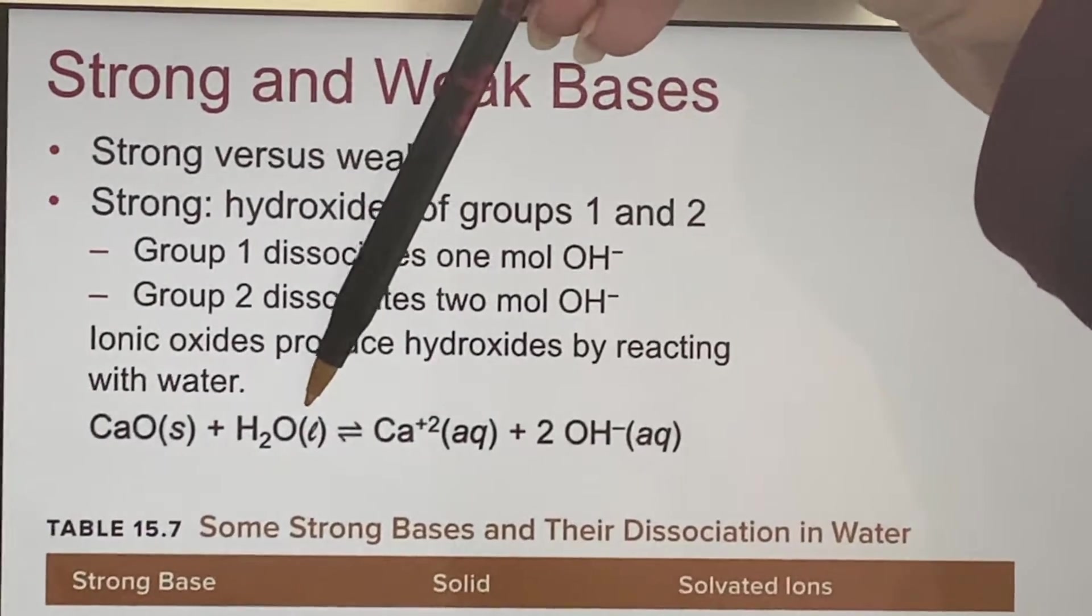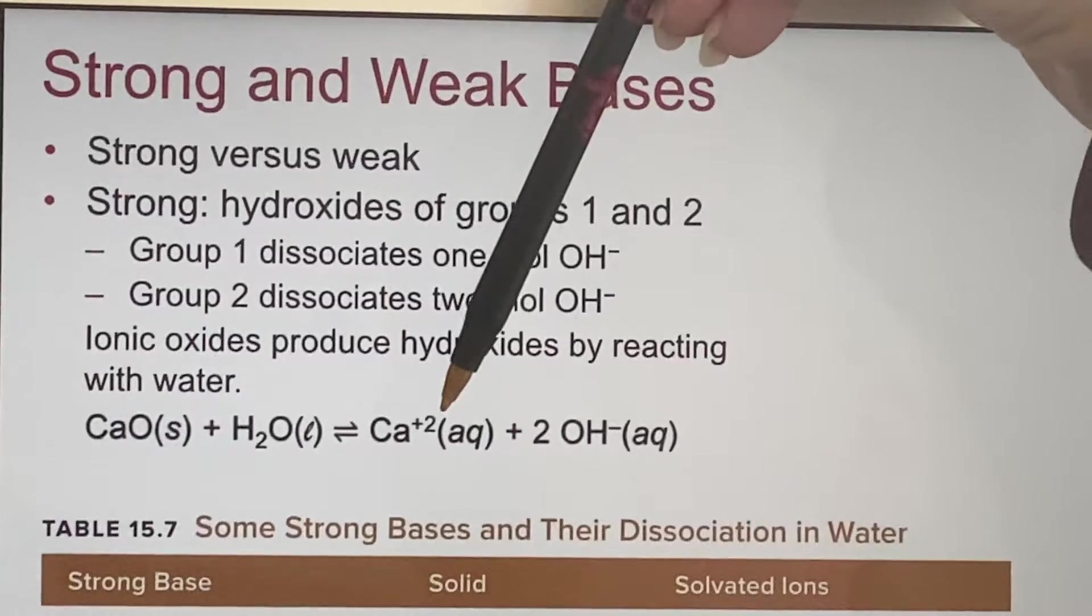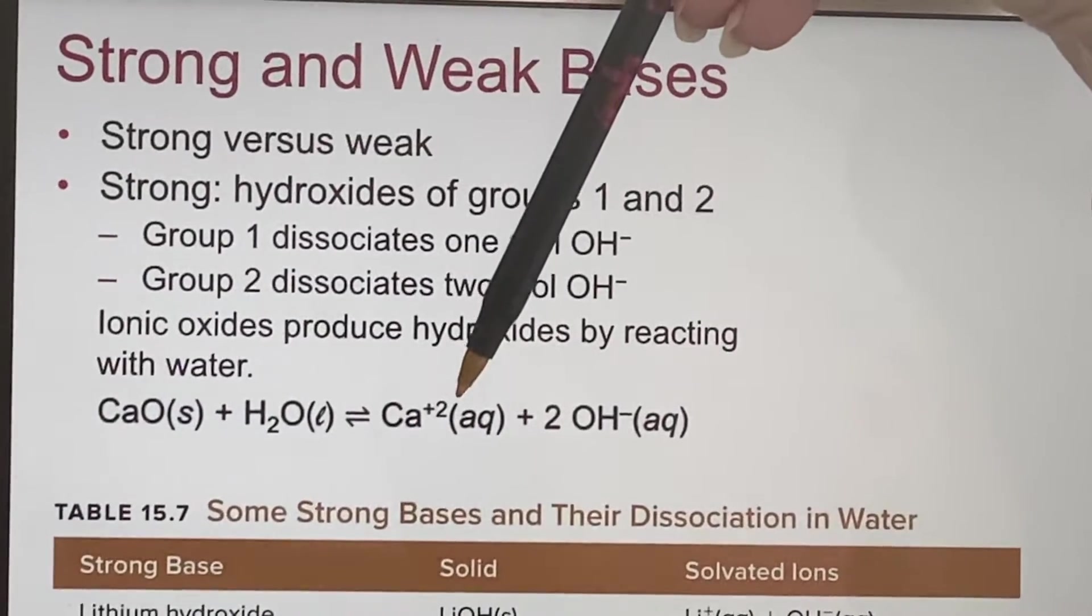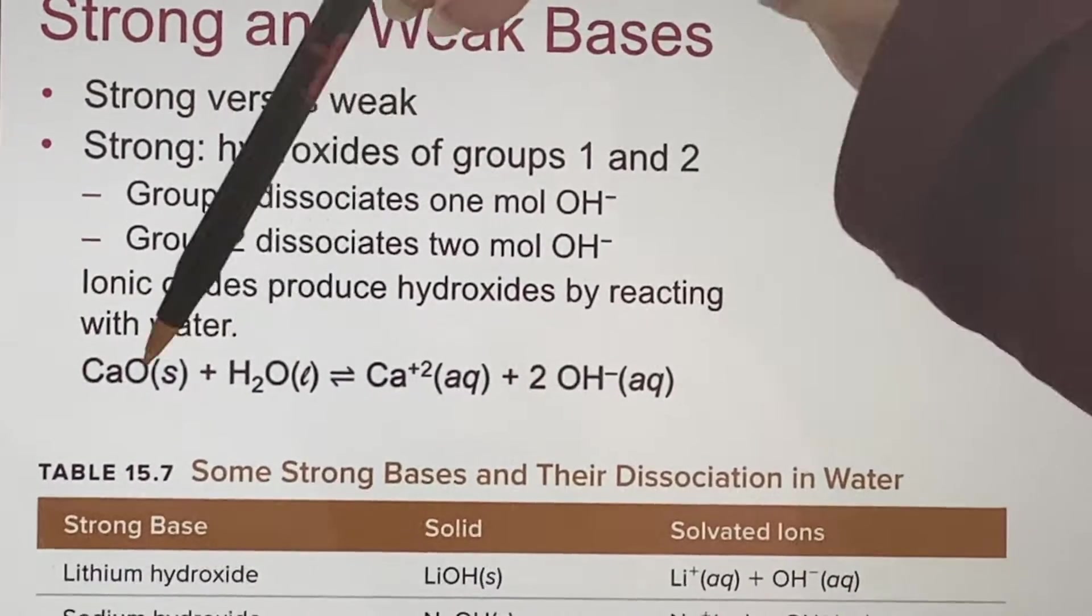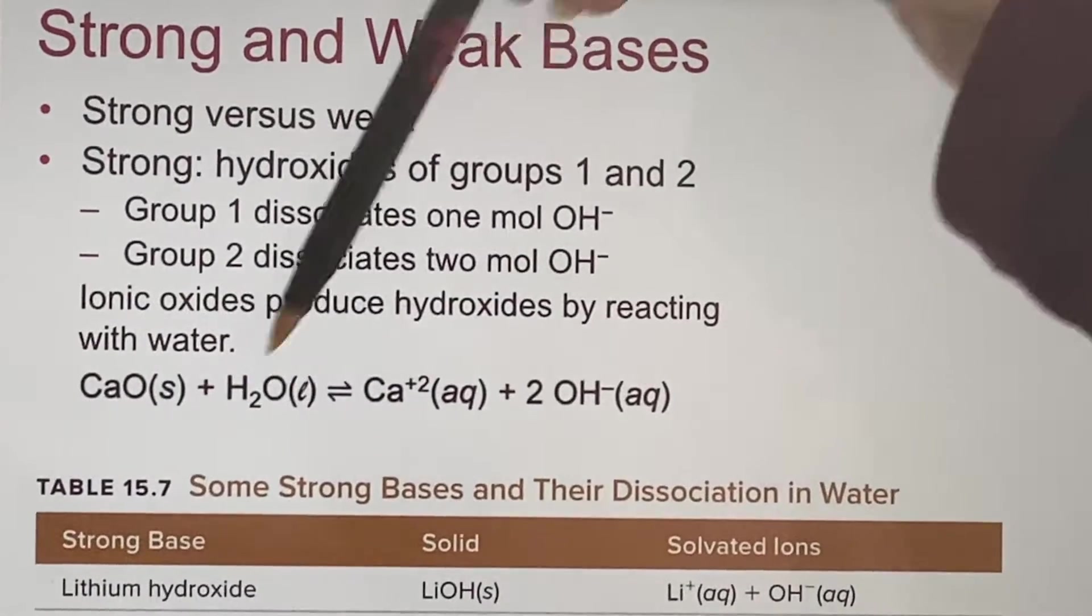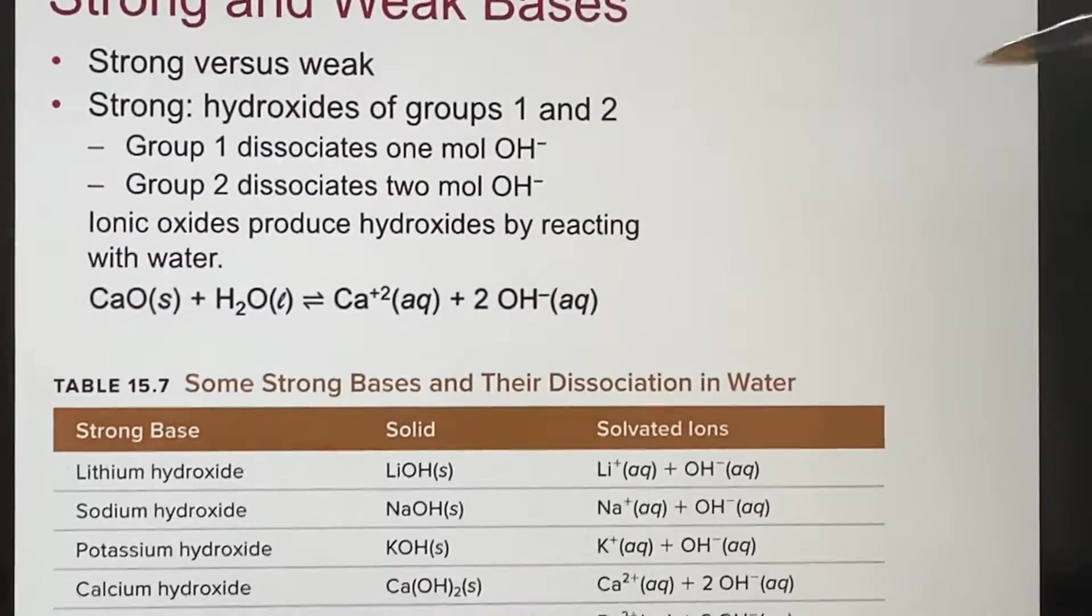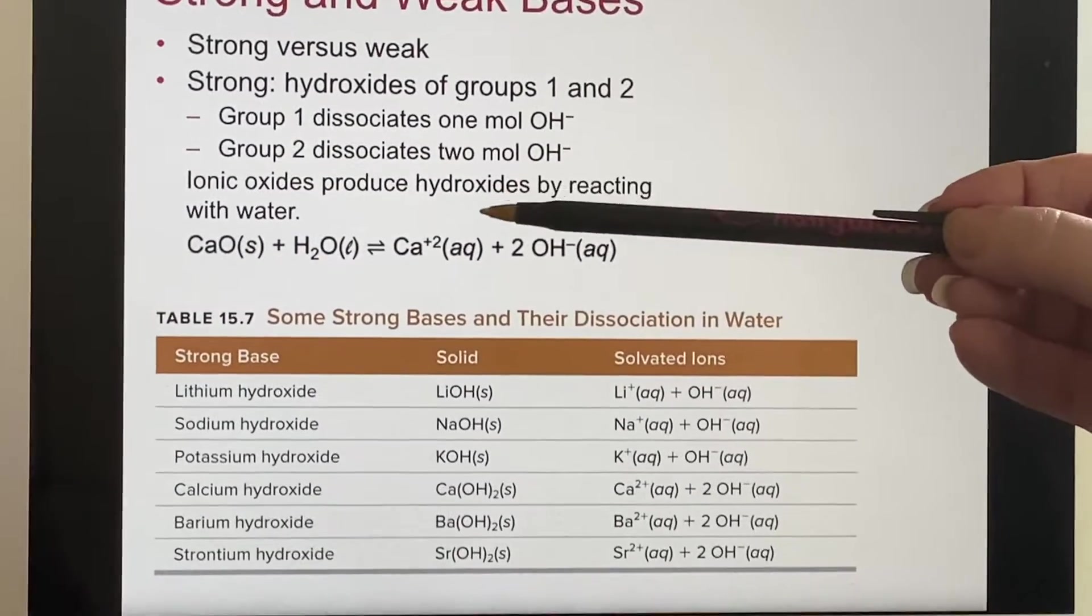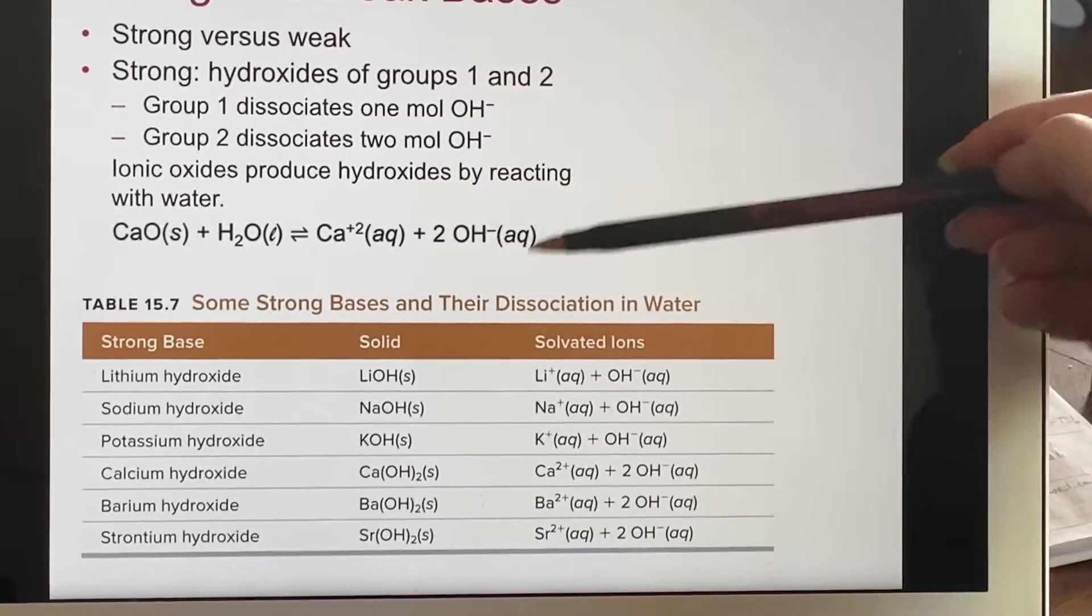It just plain reacts so that the calcium will end up as the plus two ion. And these things get moved around, we have two oxygens, we have two hydrogens, so we end up with two hydroxide ions. So you should be looking for things in an ionic oxide, you can make hydroxides.